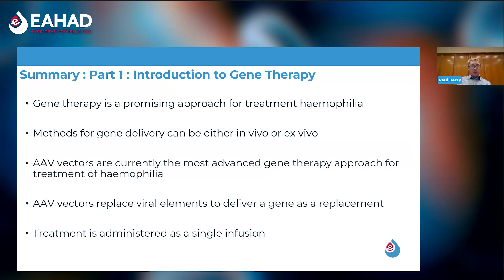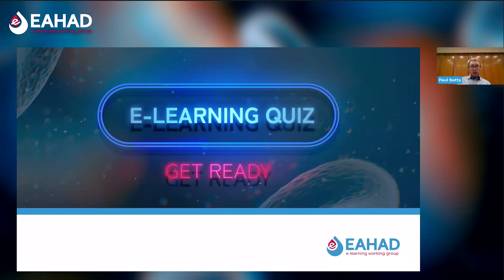In summary for this first part: gene therapy is a promising approach for the treatment of haemophilia. We've looked at the different mechanisms via which gene delivery can be attained — in vivo within the body, or ex vivo outside the body. AAV vectors for gene replacement therapy are the most advanced forms currently in development and licensed in the clinic. This approach uses delivery of a factor 8 or factor 9 gene to the liver to allow stable production, administered as a single infusion.